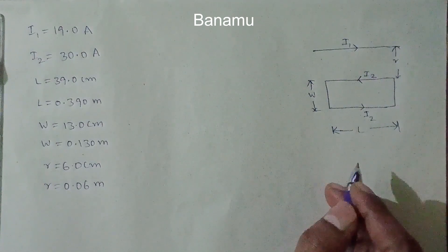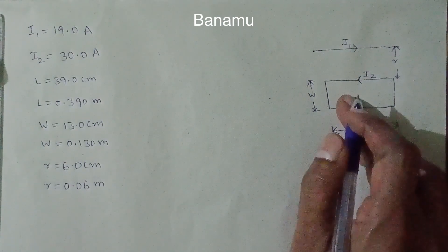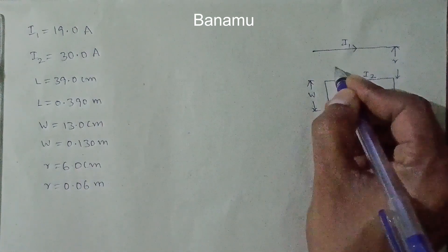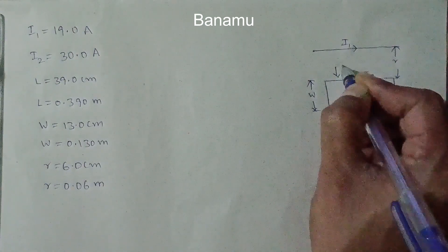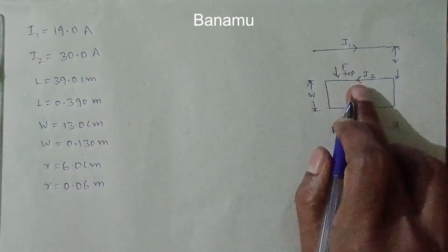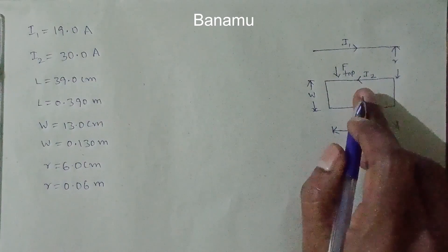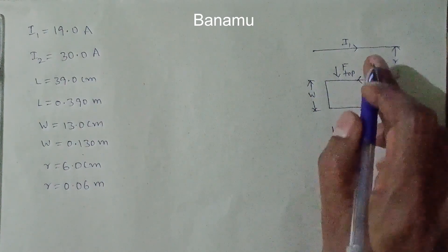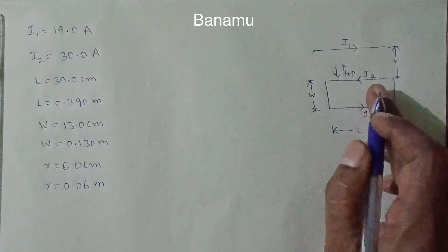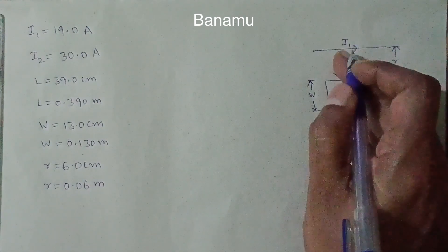Let us consider the direction of the magnetic force on the loop. For the top of the loop, the force is directed downwards. The force acting on the top of the loop is due to the wire carrying I1. Because the current in the top of the loop and the current in the wire are in opposite directions, they repel each other, so the force on the top of the loop is directed downwards.